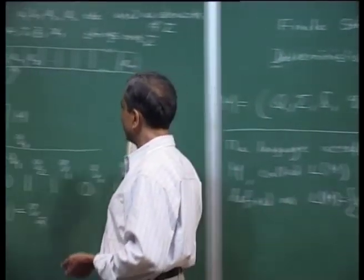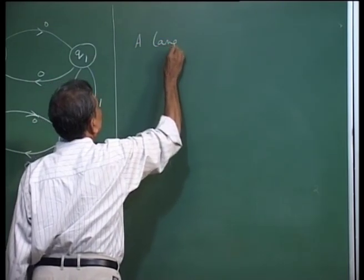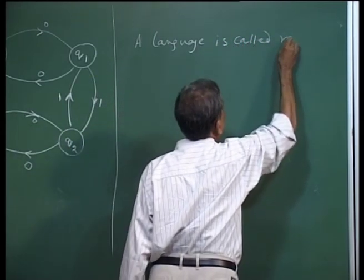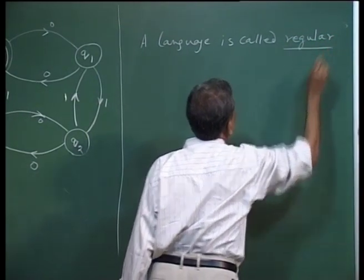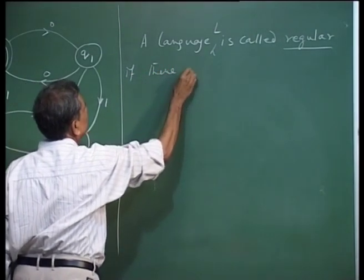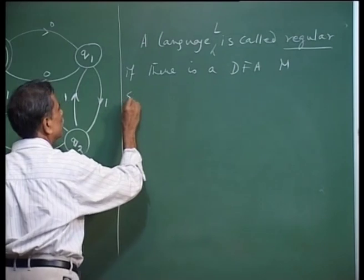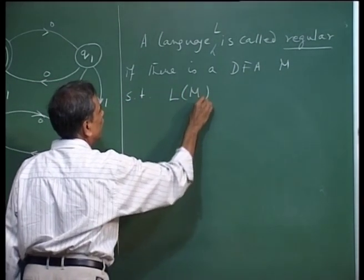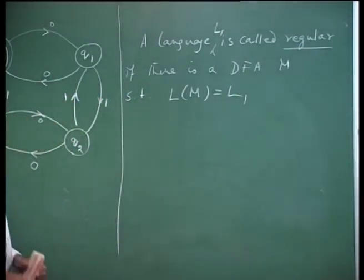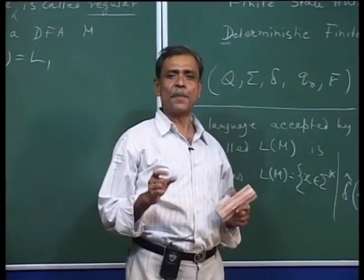Another very important definition is the notion of regular languages. A language is called regular if there is a DFA M such that the language accepted by M equals L. So the definition of a regular language is: a language is regular if you can find a DFA M which accepts that language.